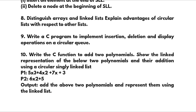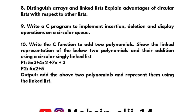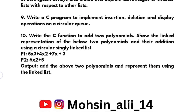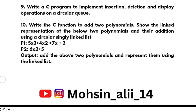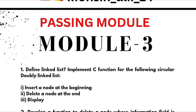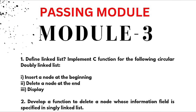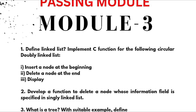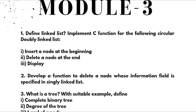I will provide the previous year question papers so you can focus on the problematic part — no need to discuss problem samples here. Module 3 is again a passing module. Define linked list and implement C functions for the following on circular doubly linked list: insert a node at the beginning, delete a node at the end, and display.